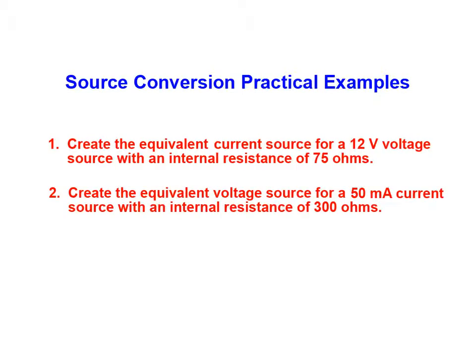In the second part of our practical examples we'll be converting a 50 milliamp current source with an internal resistance of 300 ohms to its voltage source equivalent. Once again the two resulting circuits will behave identically with respect to a connected load.